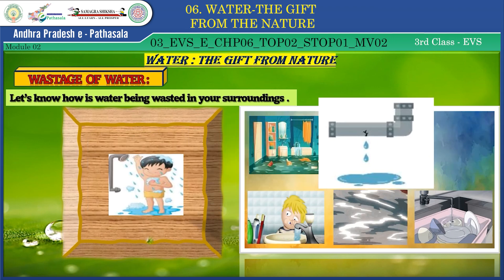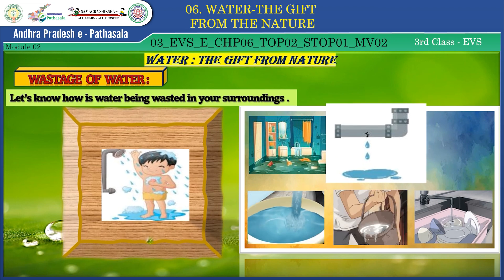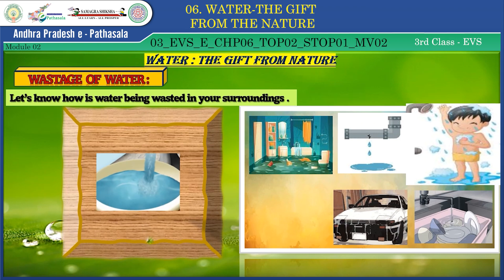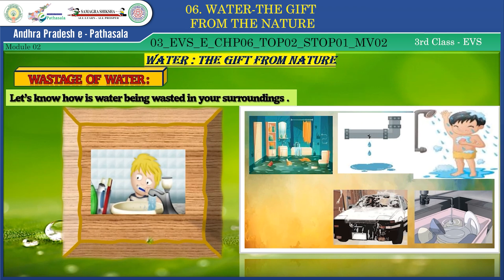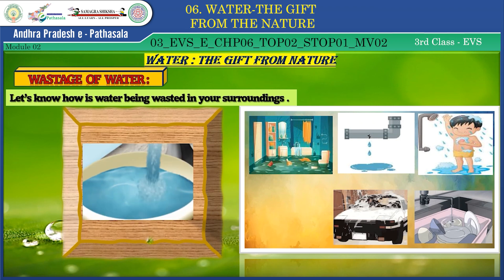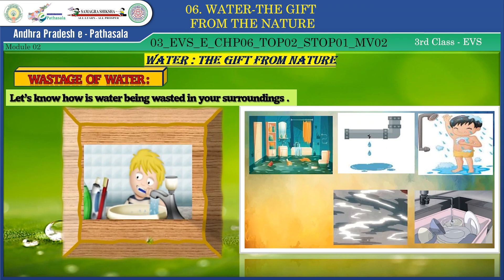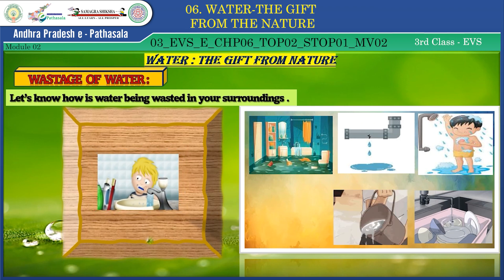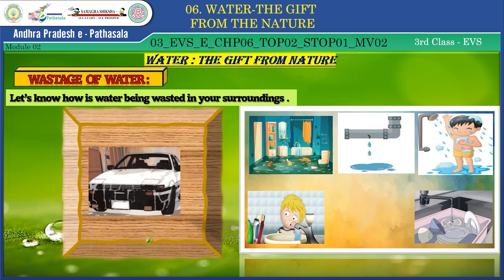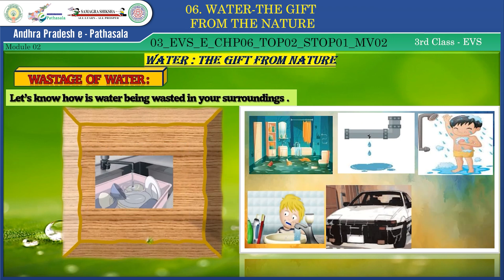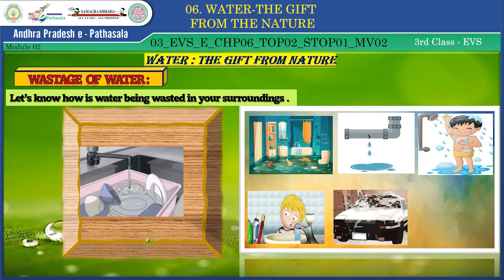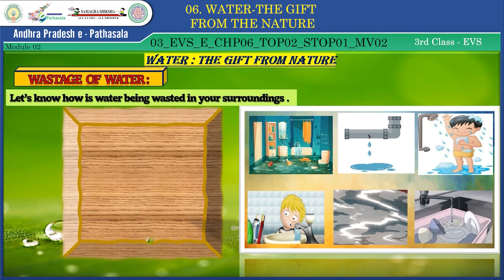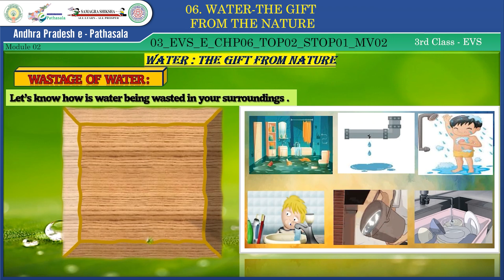Here, a lot of water is being used with a shower. See this boy brushing — do you think that is the correct way? It is wrong; a lot of water is wasted. This man is using buckets of water to clean his car. Too much water is flowing while washing dishes. These are a few examples of wastage we observe in our surroundings.